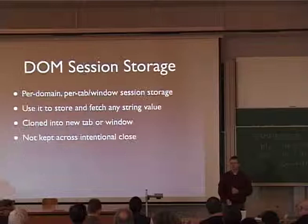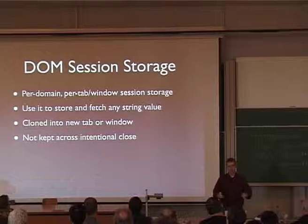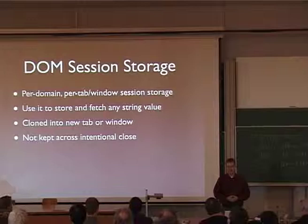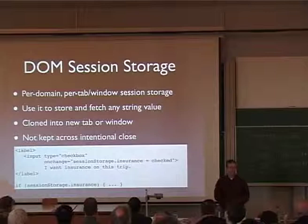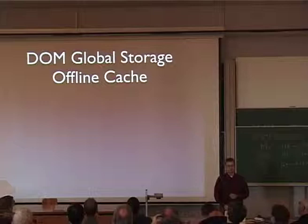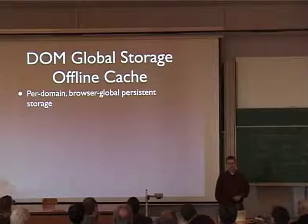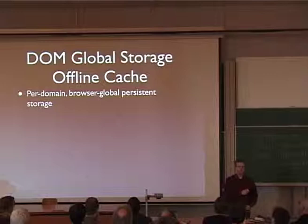DOM session storage — you can think of it basically as a big hash table on the local disk that is associated with your session. It goes away if the browser is explicitly closed and stays around if it crashes. You can use it to fetch any string value you want — in this case, shuffling the value of a checkbox on my webpage into DOM session storage under a variable name 'insurance', and then querying the value of that variable later on within my session. Even more interesting is global storage — the same thing, a hash table, except it's a per-domain value and it's persistent. I can store a value, shut down my browser, restart my computer, start my browser back up, and pull the value back out without ever having to go back to the net.